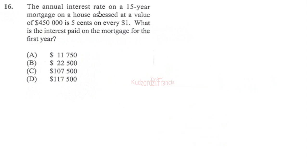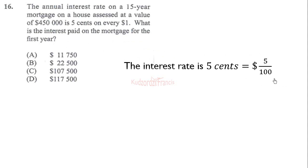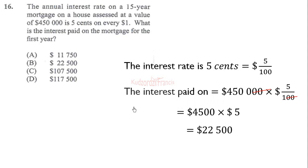Question 16: The interest rate on a 15-year mortgage on a house assessed at 450,000 dollars is five cents on every one dollar. The interest rate is five cents, the same as 5 over 100. To find the interest paid on 450,000, we multiply the rate of 5 over 100 by the mortgage amount. Simplifying: 100 cancels and we get 4500 times 5, giving us 22,500 dollars.